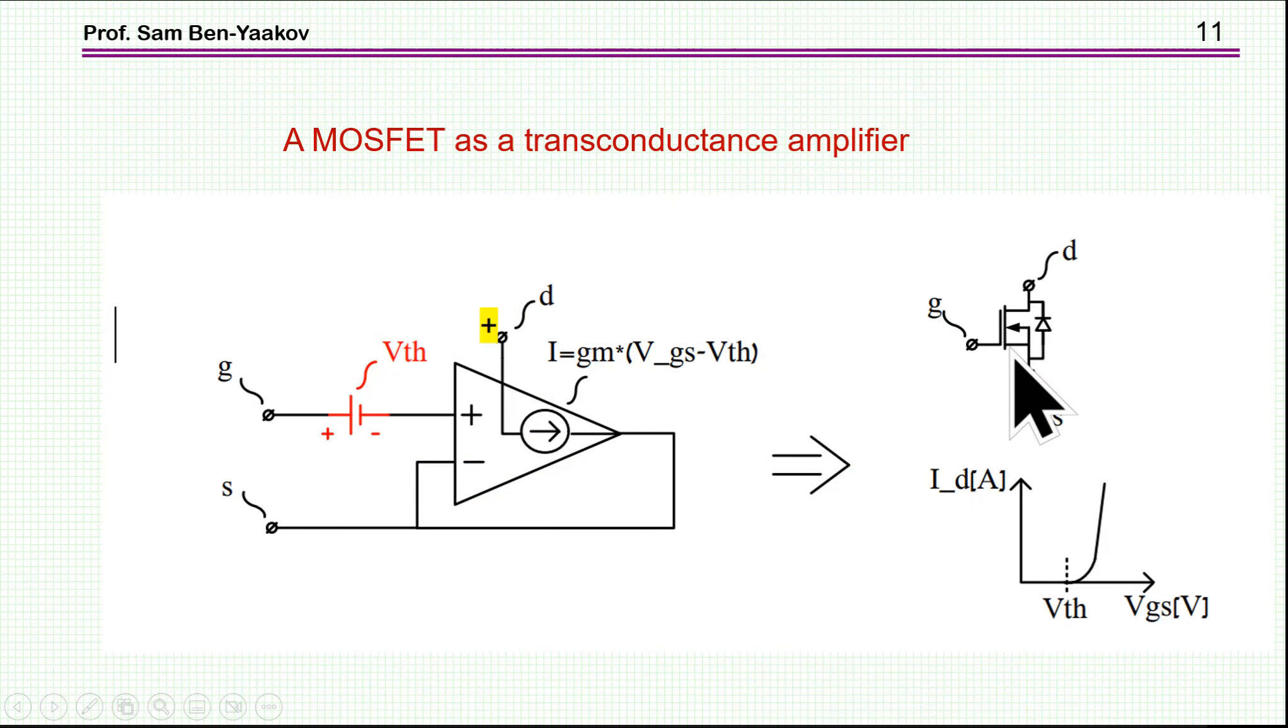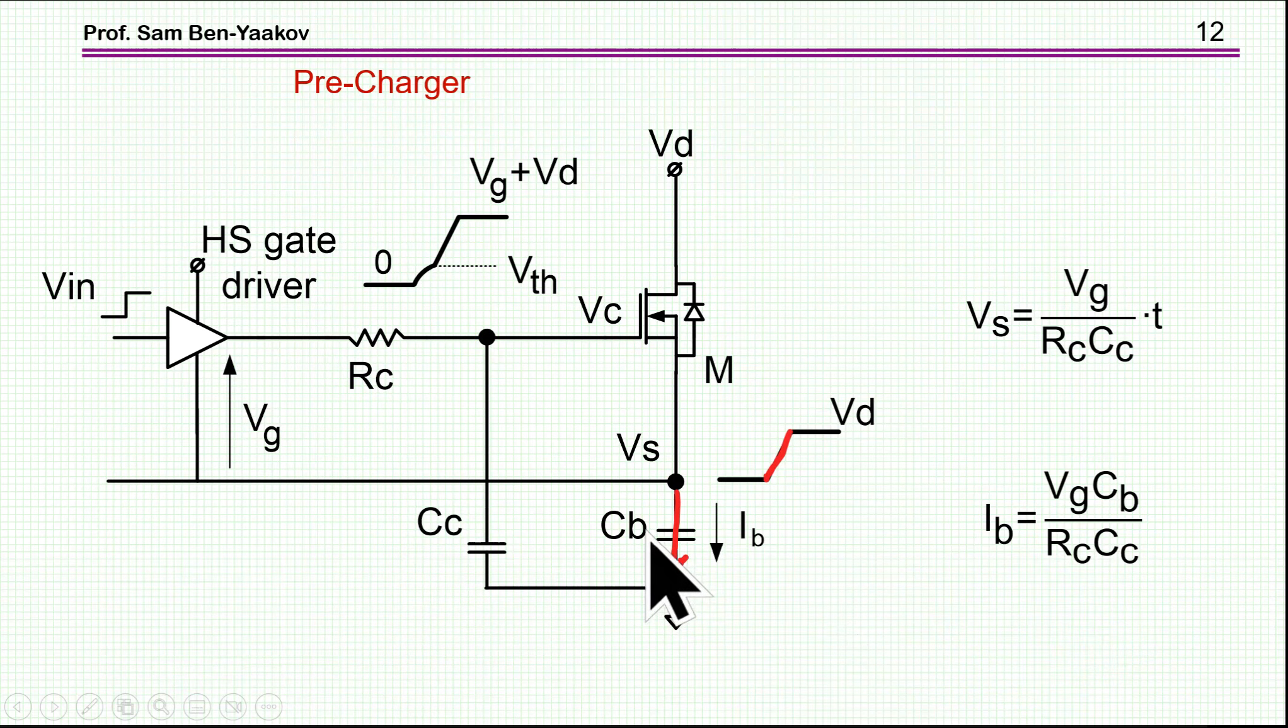Now a MOSFET is actually a transconductance amplifier, if this is the input and this is the output, except that it has some threshold. That is, it will start operating in the linear mode after reaching the threshold voltage, which is just an offset.